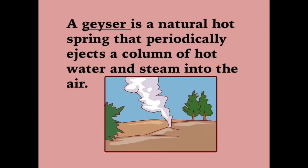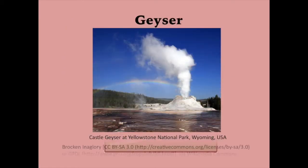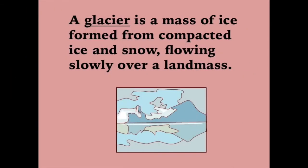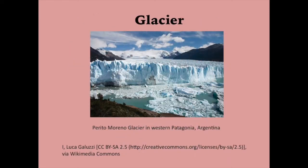A geyser is a natural hot spring that periodically ejects a column of hot water and steam into the air. A glacier is a mass of ice formed from compacted ice and snow flowing slowly over a landmass.